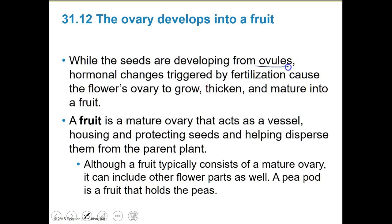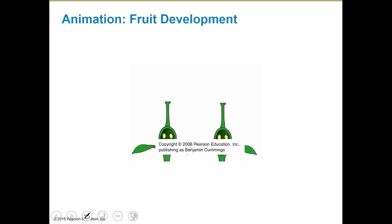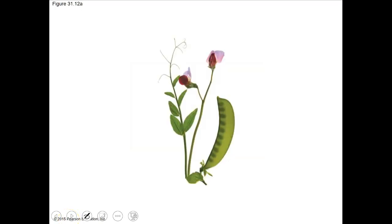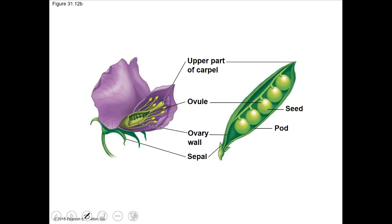While seeds are developing from ovules, hormonal changes trigger fertilization and cause the flower's ovaries to grow, thicken, and mature into a fruit. A fruit is a mature ovary — it acts like a vessel housing and protecting seeds and helping disperse them from the parent plant. Although a fruit typically consists of a mature ovary, it can include other floral parts as well. In this figure, you can see the upper part of the carpal and the ovules — our seeds are ovules — along with part of the sepal and the ovary wall also included in the fruit.